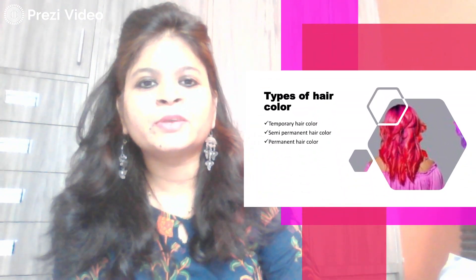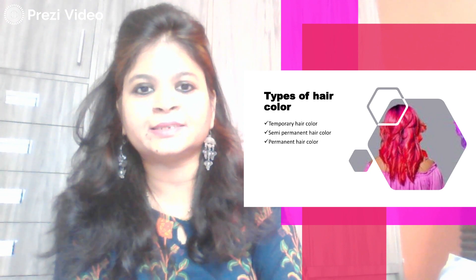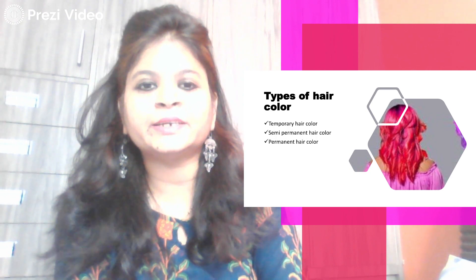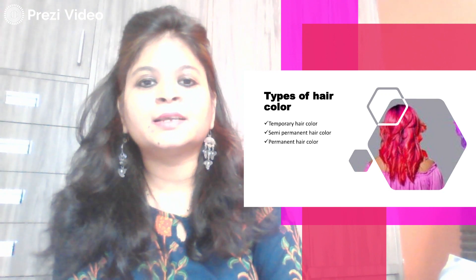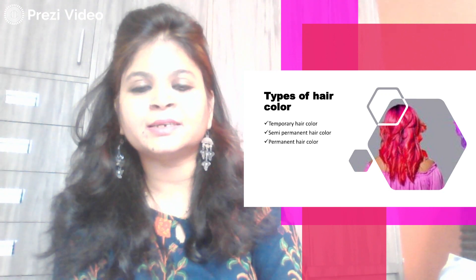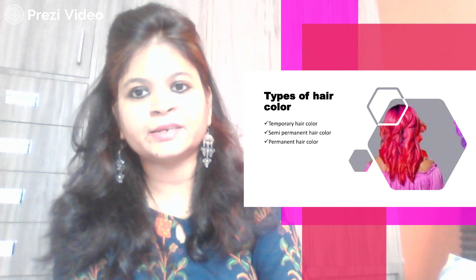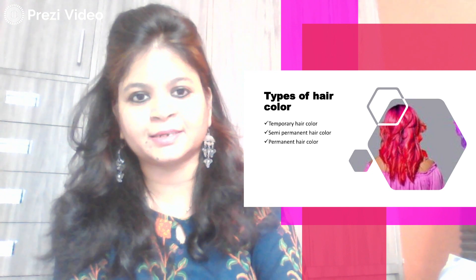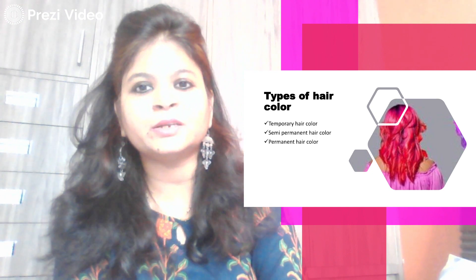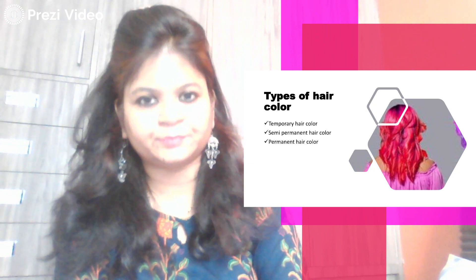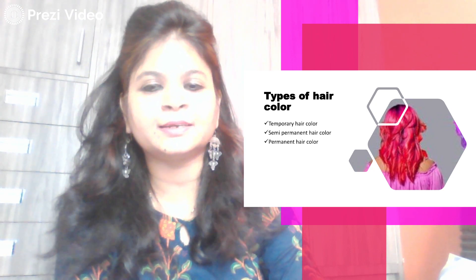The types of hair dyes available in the market are basically segregated into three types: first is temporary hair colors, second is semi-permanent hair colors, and third is permanent hair colors. There is another category known as hair lightening colors, which is simply the bleaching of colors whereby the melanin of the hair color is reduced.